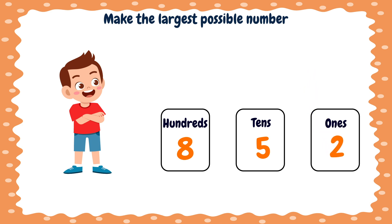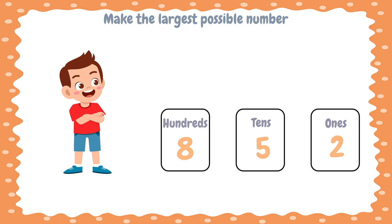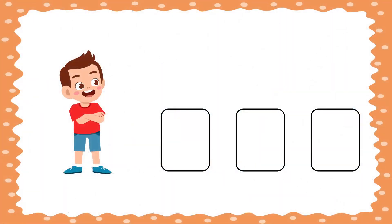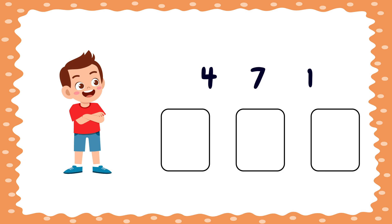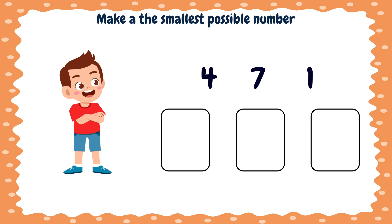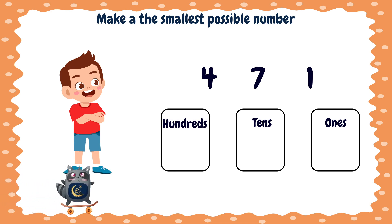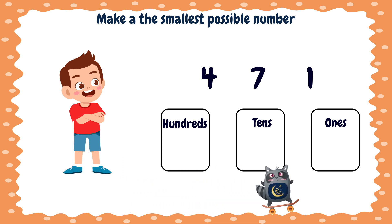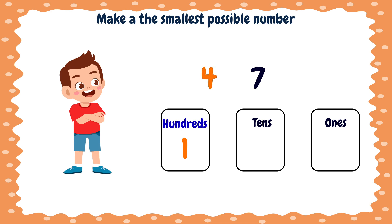What do we do if we want to make the smallest number? Let us find out together. We have three numbers: four, seven, one. We want to make out of them the smallest number that consists of three place values — ones, tens, and hundreds. To make the smallest number, we will put in the hundreds place the smallest number. Which of these numbers is the smallest? The number one. Excellent. So we will put it in the hundreds place. We have two numbers left. We will put the smaller number in the tens place. Which number is the smallest? The number four. Well done. So we will put it in the tens place. Then we will put the number seven in the ones place.